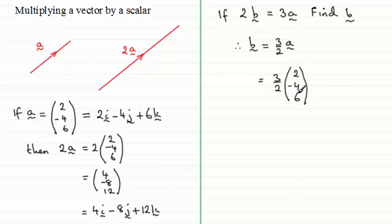And if you do 1 and a half times each of these values here, you end up with the column vector 3, minus 6, 9.